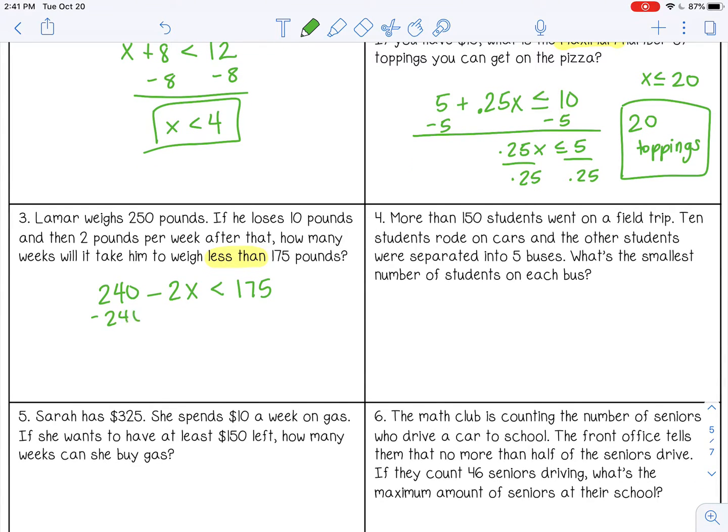So I'm going to subtract 240 from both sides. And then I'm going to divide by negative 2. And remember, when you divide by a negative, you flip the sign. So 65 divided by 2, that's 32.5. So how many weeks will it take him to weigh less than 175? It's going to take him 32.5 weeks, actually greater than 32.5 weeks. So when you write your answer, you want to write it in terms of the problem. So it's going to take him more than 32.5 weeks. So basically 33 weeks or more.